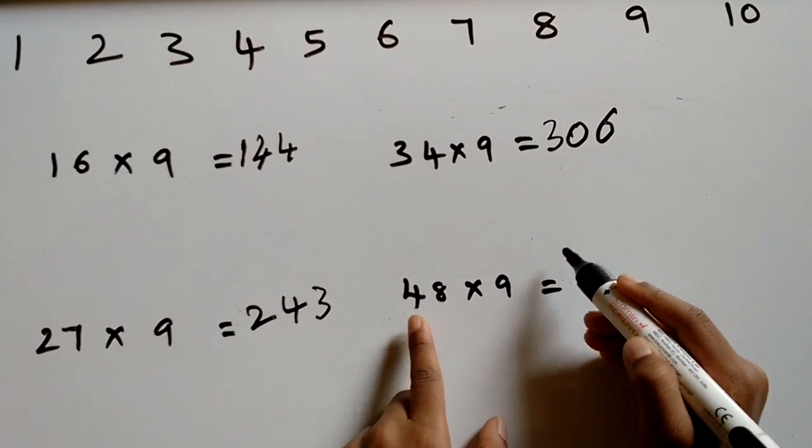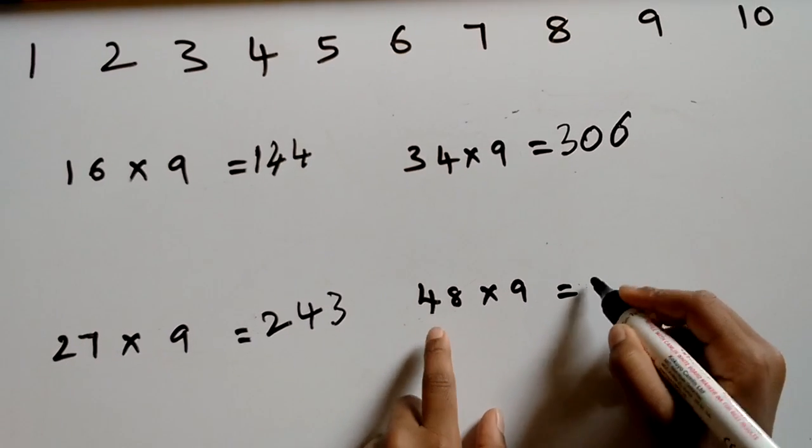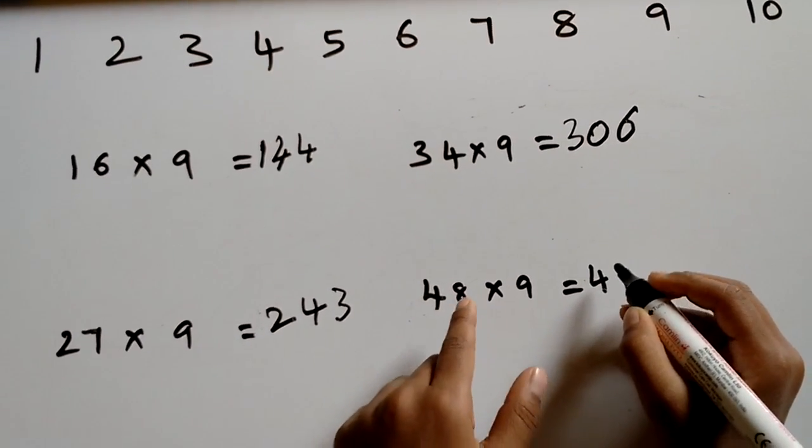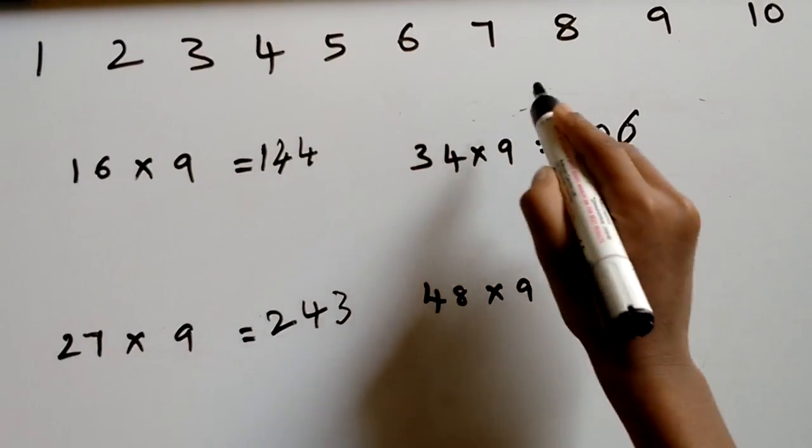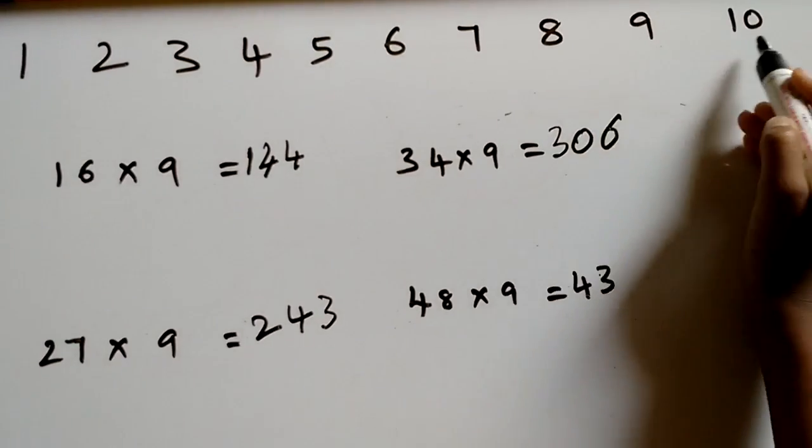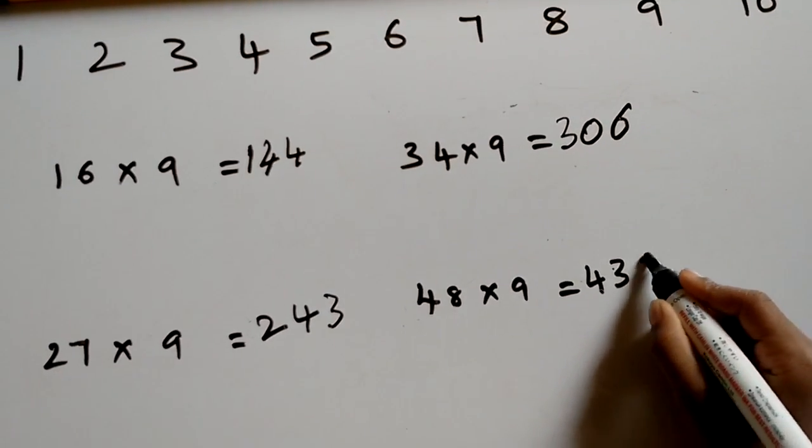48 nines are. First write 4. Between 4 and 8 there are 3 numbers. So write 3. After 8 there are 2 numbers. So write 2.